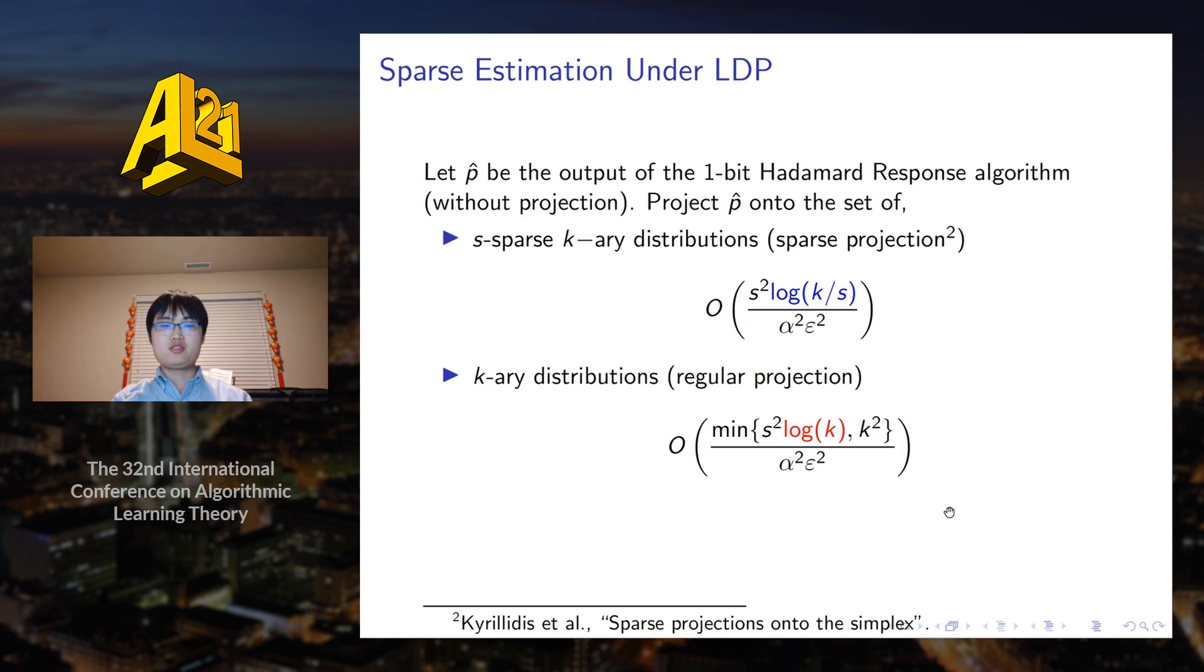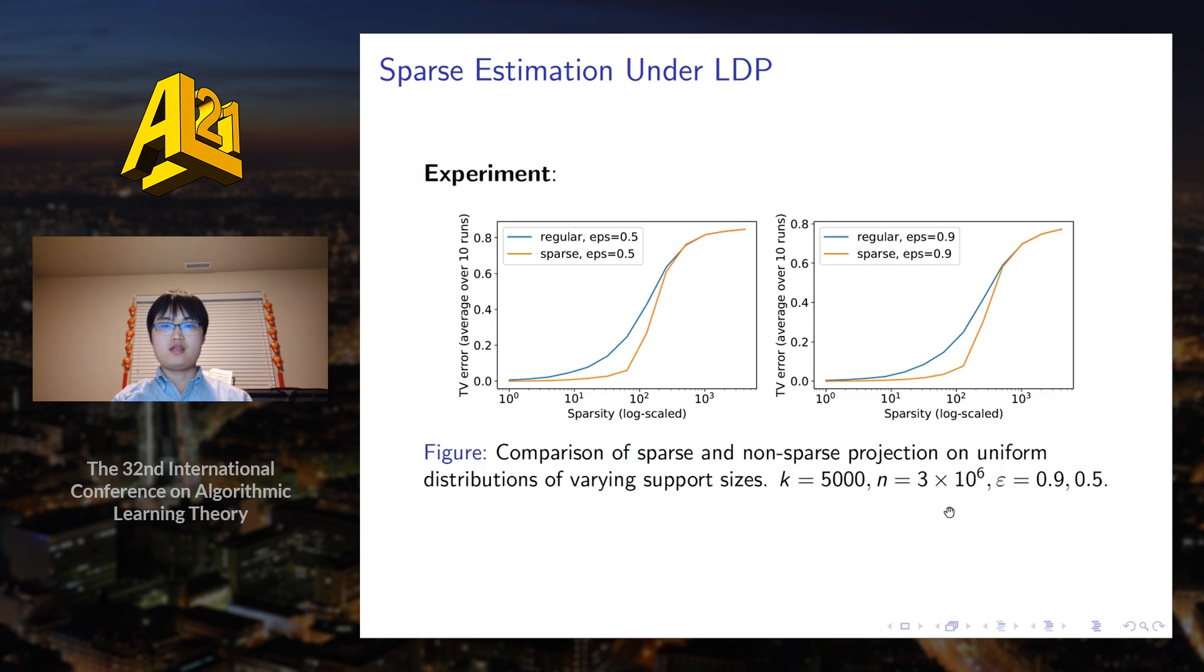Another option is to project onto the set of k-ary distributions. However, we are only able to show a sample complexity that has a log K dependence. Our theoretical analysis is verified by our experiment. We can see that with sparse projection, the estimation error is much smaller than the algorithm using regular projection. Regardless of the projection method, we can see that with smaller support size, the estimation error is much smaller.